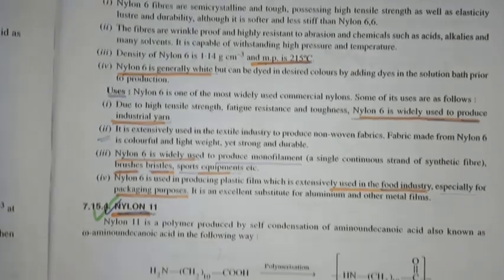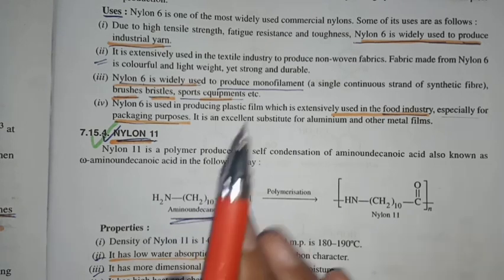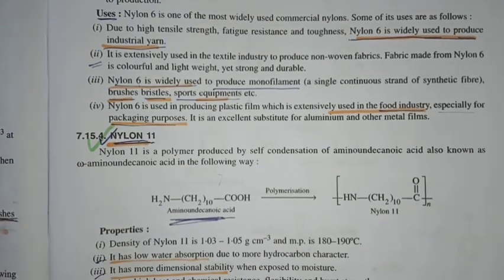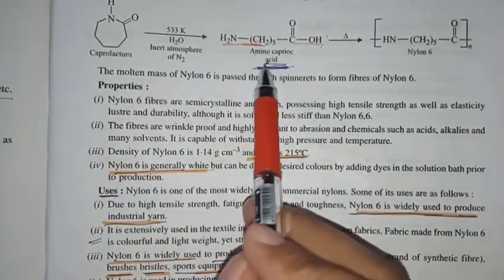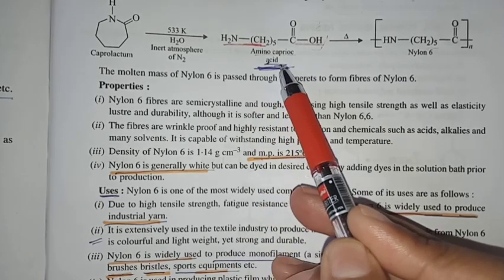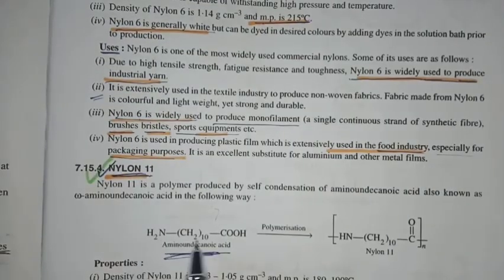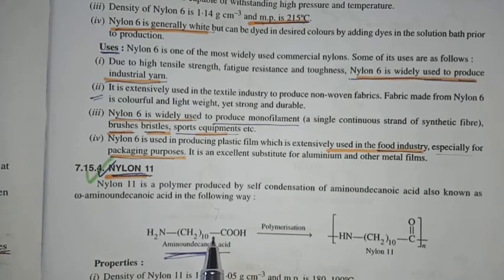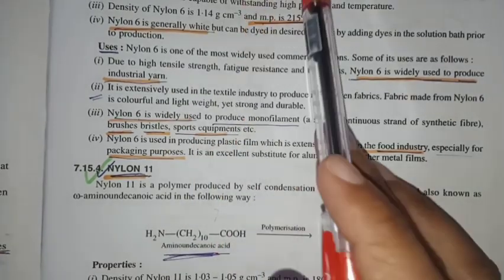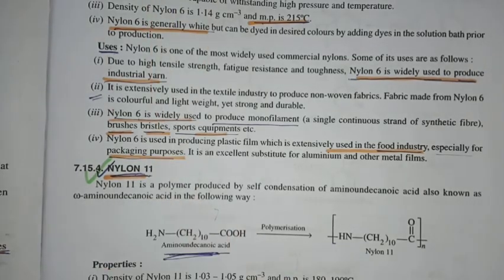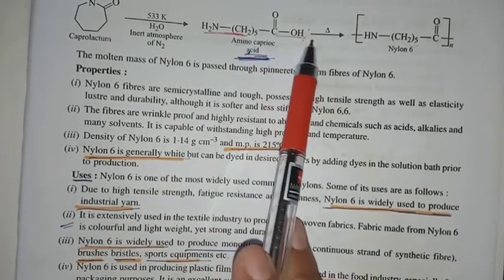In nylon 11, what is the monomer? Amino undecanoic acid. And what is it made from? Caprolactam is amino caproic acid. The difference is that CH2 is 5 and CH2 is 10. So you can learn it. It is easy to learn that in nylon 6, what is CH2? 5 and CH2 10.